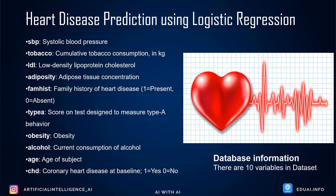Before we start, we need to understand what the dataset looks like. Logistic regression is a classification technique to predict whether a person may have a heart disease or may not — yes or no. If you look at the columns: SBP is blood pressure, tobacco consumption, low-density cholesterol, family history of heart disease (one for yes, zero for no), obesity, alcohol consumption, age, and finally the Y column CHD — coronary heart disease — which we need to predict.